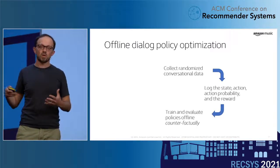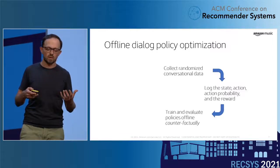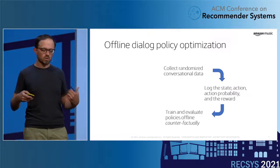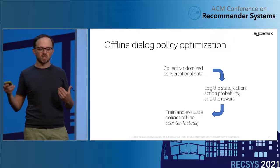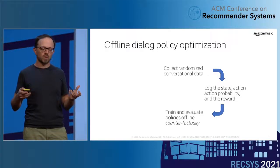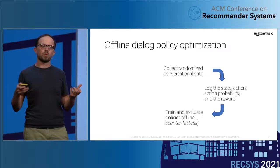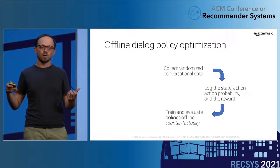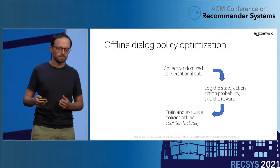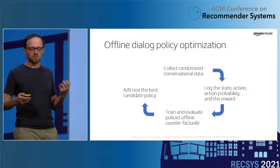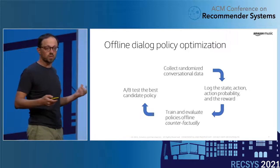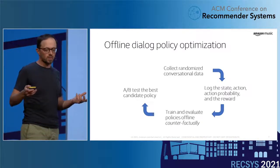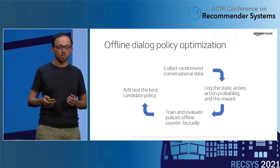Once we have collected data, we can use that to do offline policy optimization and evaluation counterfactually. We can try all sorts of parameters and exploration techniques, and by counterfactually, I mean we want to estimate the reward of the policy we just trained, even though we only collected data using a logging policy. That allows us to pick a good candidate, deploy it to customers, and do an A/B test to confirm whether the new policy beats the old one.